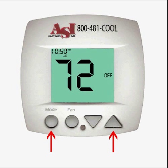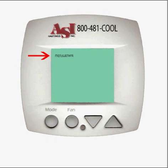To start programming your thermostat, press the mode and up buttons at the same time and hold them for a few seconds until the display changes. The days of the week are displayed and flashing.